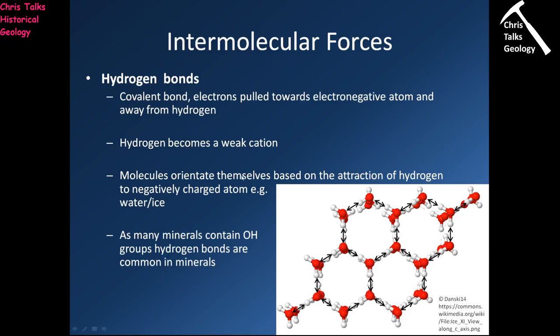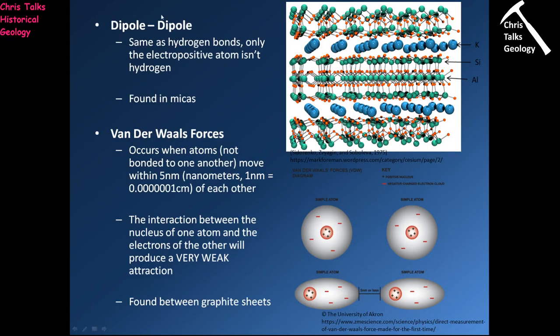The first intermolecular force is hydrogen bonds, which must be between oxygen and hydrogen. If it's not between oxygen and hydrogen, it's referred to as dipole-dipole — the same principle, only the electropositive atom isn't hydrogen. Dipole-dipole is most commonly seen in mica minerals — those minerals you could peel just like turning a page in a book, where each page was quite strong and flexible but you could peel one from another.